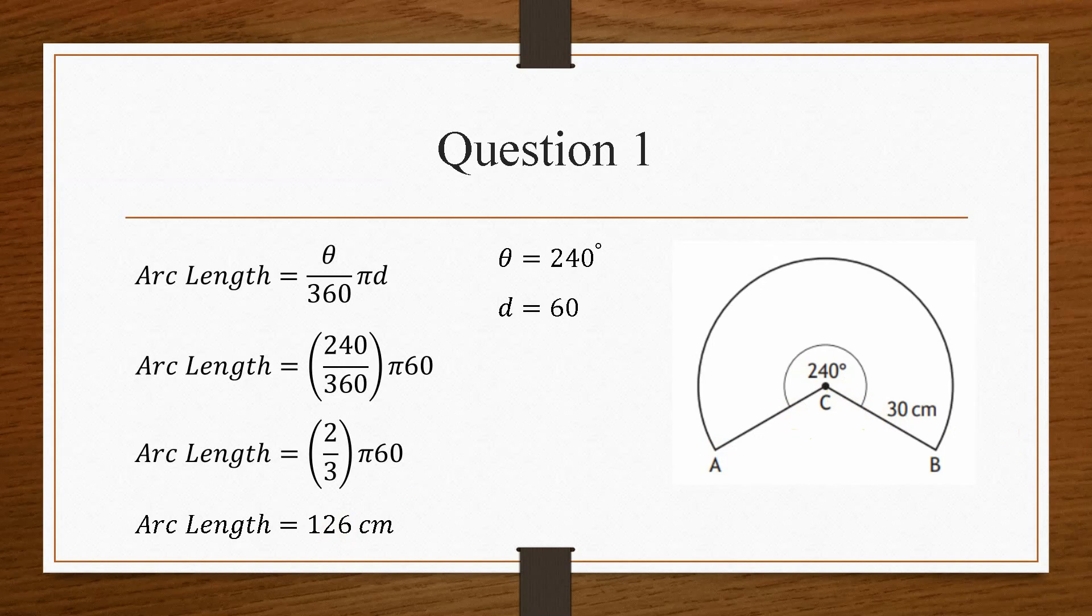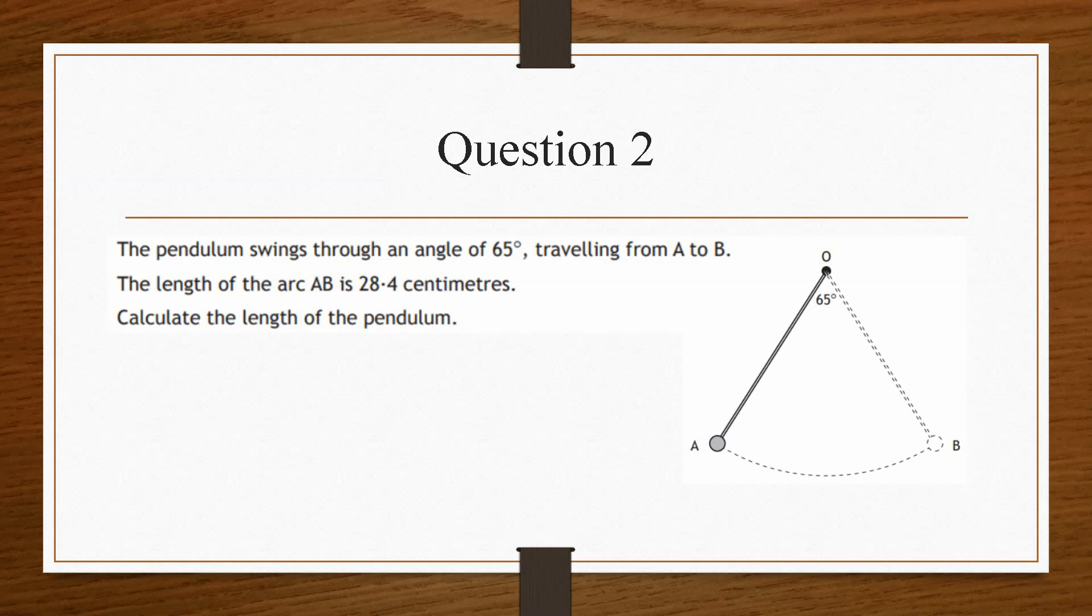But in this question, it only asks for the major arc length. So question two is a bit of a problem-solving question. It gives us a pendulum. This is a pendulum here. And it makes an angle of 65 degrees. So as it swings backwards and forwards, it makes an angle of 65 degrees.